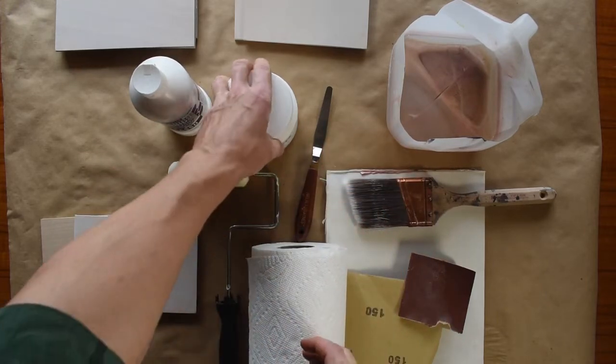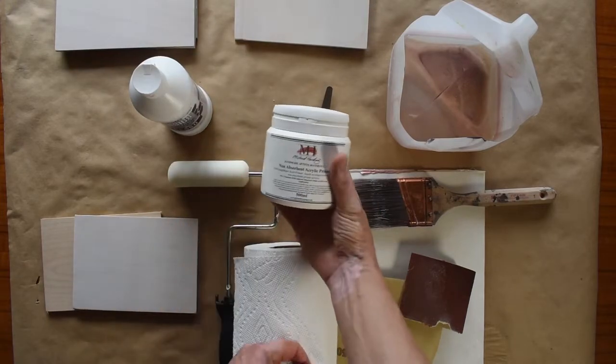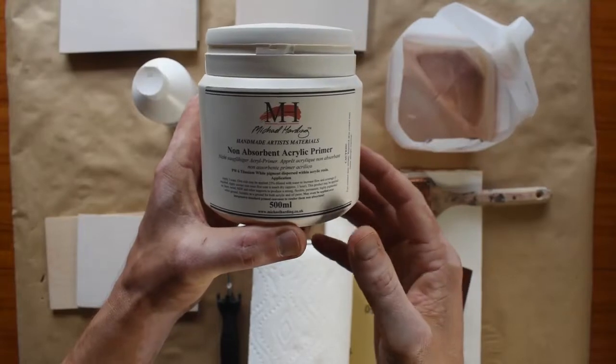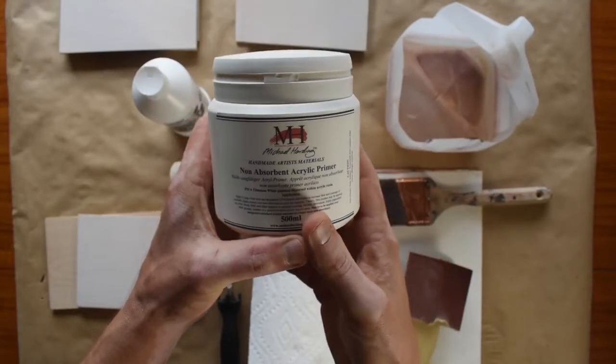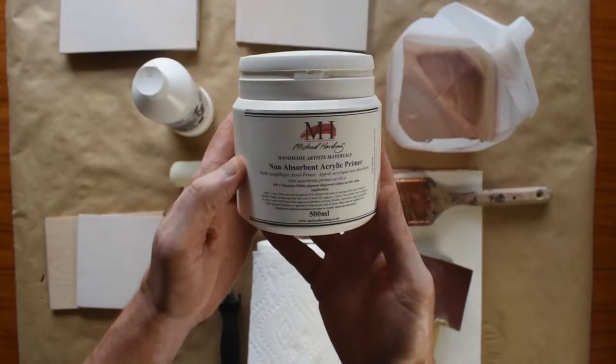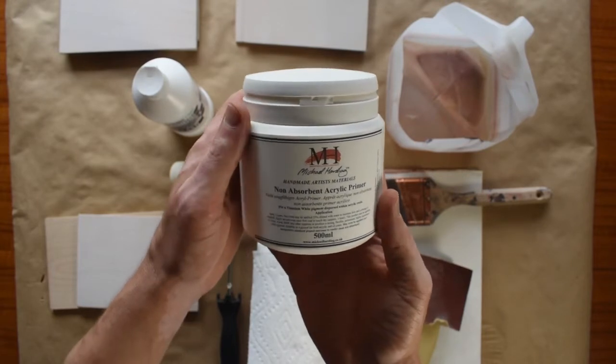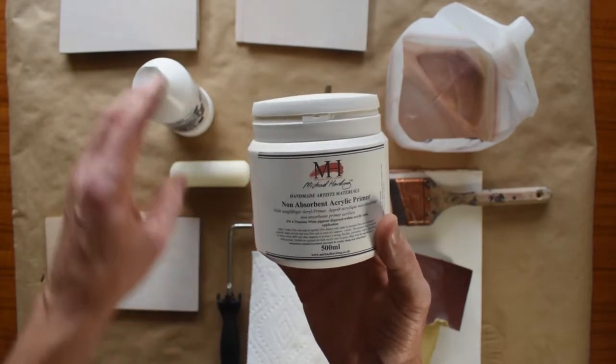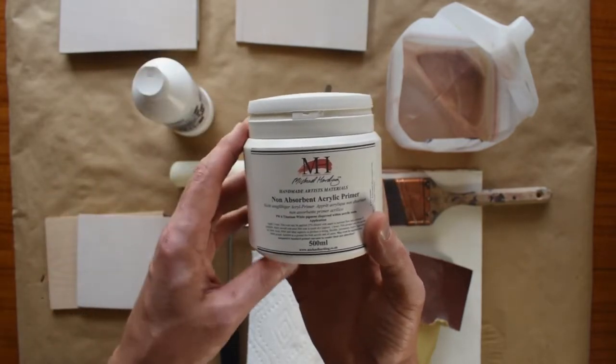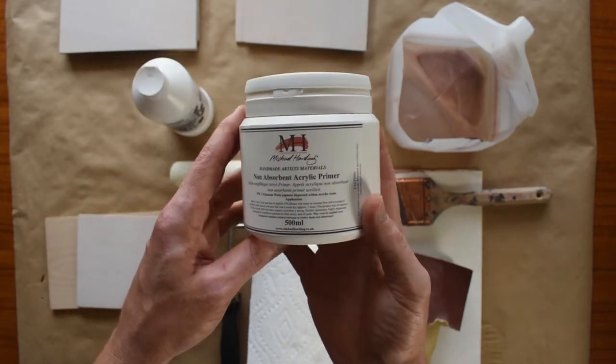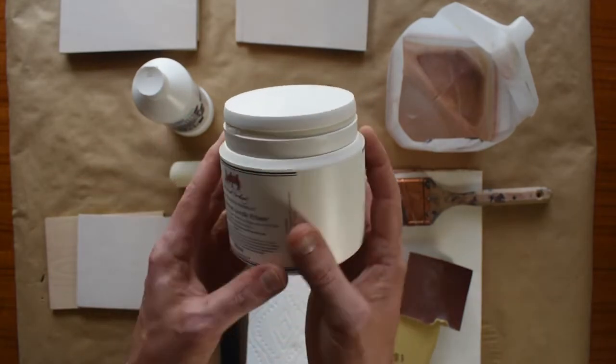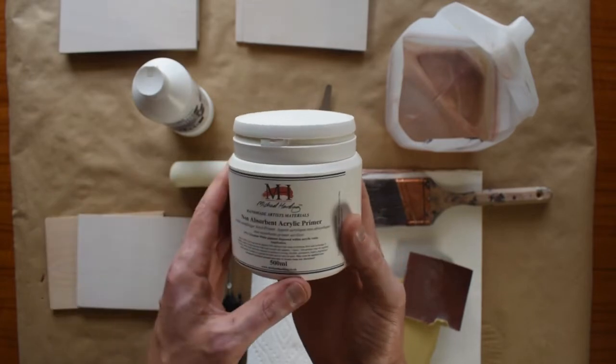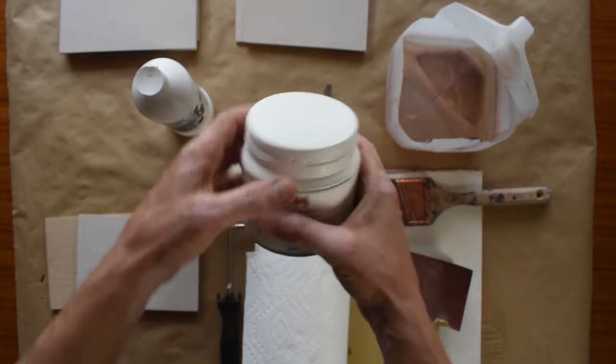But I did hear about another product by the Michael Harding Paint Company, and this is a non-absorbent acrylic primer. So this is my first time using this product. I'm kind of excited to see how it turns out. I have been using Ampersand pre-primed panels for the last couple months and I'm really happy with those. They're not as absorbent as the panels I get when I use the regular Liquitex gesso. So hopefully this will give me a nice surface to work on and won't suck out as much oil from the paint.